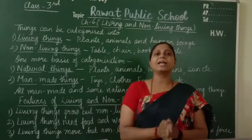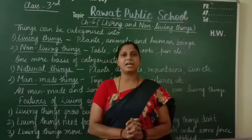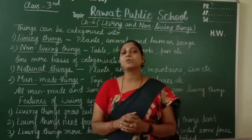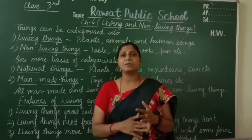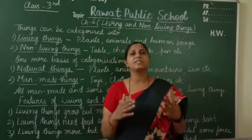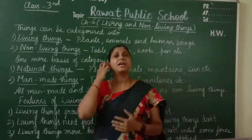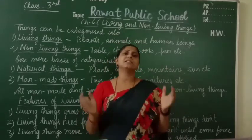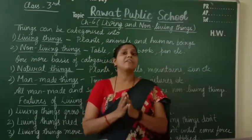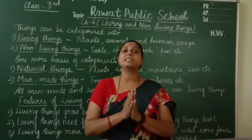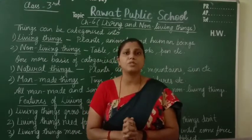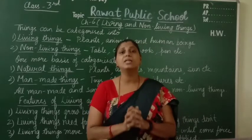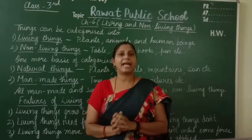Before starting this chapter, I want to ask you that in the previous chapter we studied that there are many things around us. There are plants, animals, table, chair, beds, sofa, curtain, fan, desk, pen, pencil — many things we can see around us. We can categorize these things into three forms: solid, liquid, and gas.